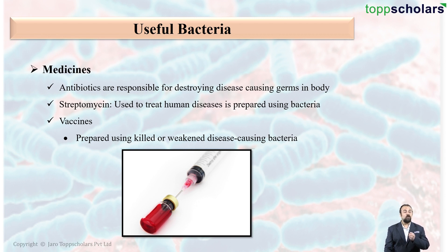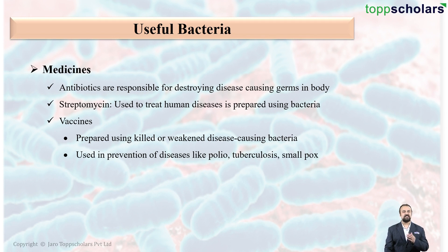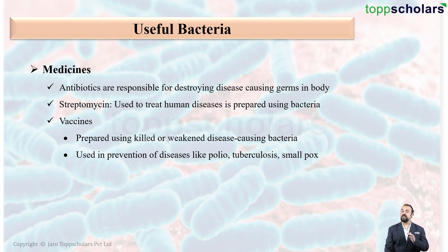Due to this, the human body learns how to defend itself from that particular bacteria when later in life it actually enters the body. Some examples of vaccines are the polio vaccine, tuberculosis vaccine, and smallpox vaccine. The tuberculosis vaccine is the one which is produced using bacteria.